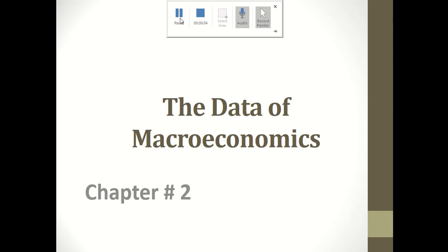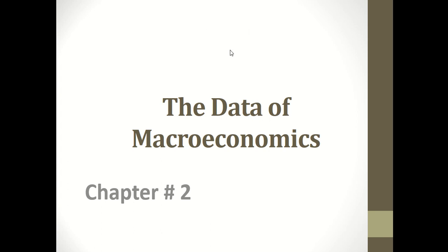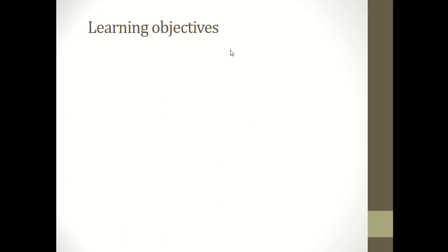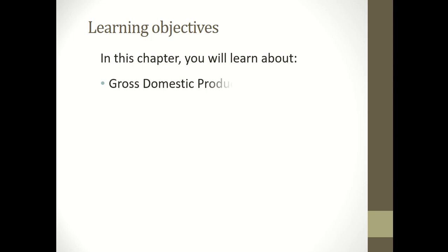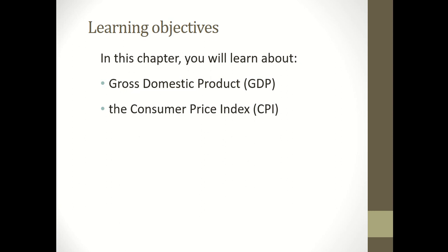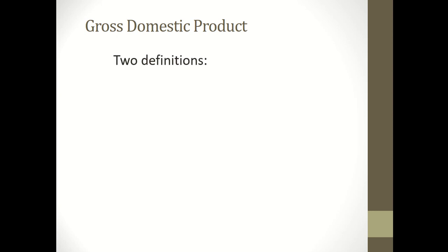This is Chapter 2 — The Data of Macroeconomics, from the book Macroeconomics by Gregory Mankiw. In this chapter you will learn about Gross Domestic Product (GDP), the Consumer Price Index (CPI), and the unemployment rate. First, we are going to discuss Gross Domestic Product, or GDP.